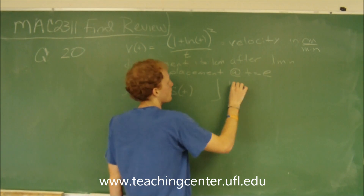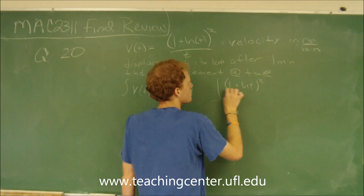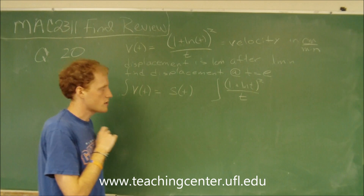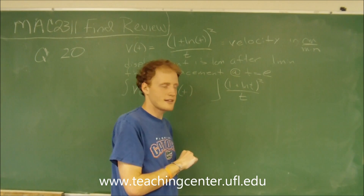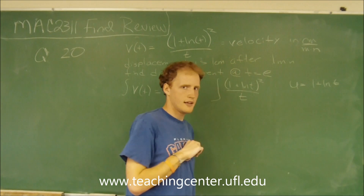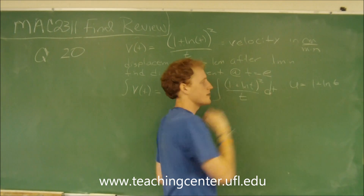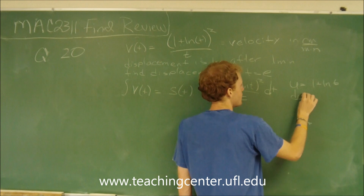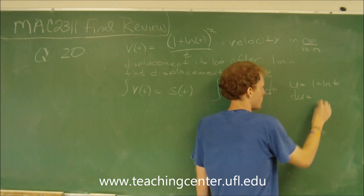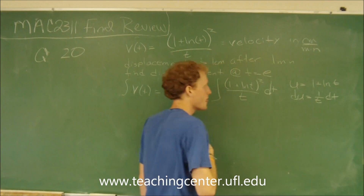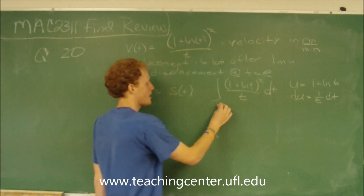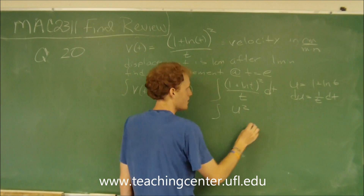We're taking the antiderivative of 1 plus natural log of t, squared, all over t. To take the antiderivative of this, we have to use u-substitution. We're going to choose u to be the inside of the square — so u equals 1 plus the natural log of t. Then du equals the derivative of 1 plus the natural log of t, which is 1 over t. We can see that we have a 1 over t dt in the problem.